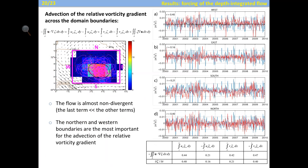Looking at which boundary is most important for advection of relative vorticity, we consider northern, western, eastern, and southern boundaries. The flow is almost non-divergent, so the divergence term is negligible — an order of magnitude smaller than the other terms. The conclusion is that the northern and western boundaries are the most important for advection of the relative vorticity gradient, with correlation coefficients of 0.4 for both.